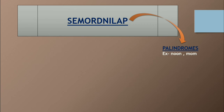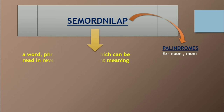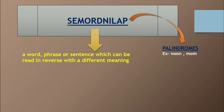اگر palindromes word کو ہی آپ right to left read کرے تو بنتا ہے Semordnilap — جو ہم آج کی ویڈیو میں دیکھنے والے ہیں۔ It is basically a word, phrase or sentence which can be read in reverse with a different meaning. یعنی palindromes میں جب ہم reverse read کرتے ہیں word کو تو same word بن رہا ہوتا ہے، لیکن Semordnilap میں اگر آپ ایک word کو reverse read کریں گے تو ایک different meaning کا word بنے گا۔